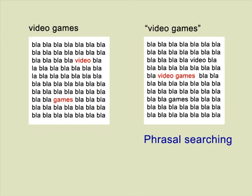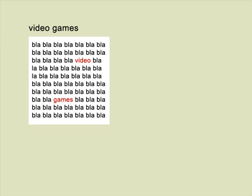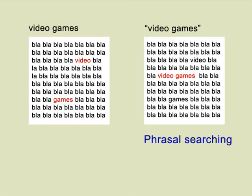For instance, in some databases, if you enter video games just as is, it may retrieve documents that contain the word video in one place and games in another part of the document. By putting double quotes around the term video games, you will only retrieve documents containing the two words next to one another — in other words, you'll only retrieve documents that mention video games.